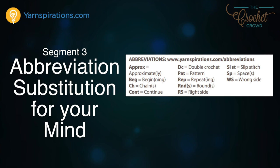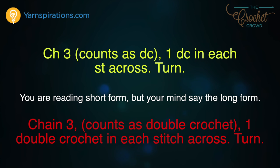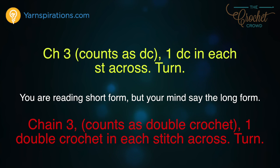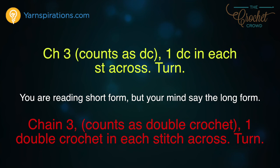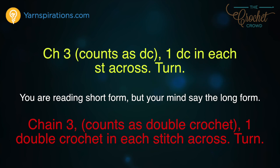Now let's talk about reading and substituting the words in your head. The more you use abbreviations, the more your mind will substitute them with real words. For example, let's review: 'CH3 counts as DC, 1 DC in each ST across, turn.' My mind doesn't say it like that — my mind says 'chain three counts as a double crochet, one double crochet in each stitch across.' So your mind will substitute with just practice, taking the abbreviations and applying the real words of what they mean.